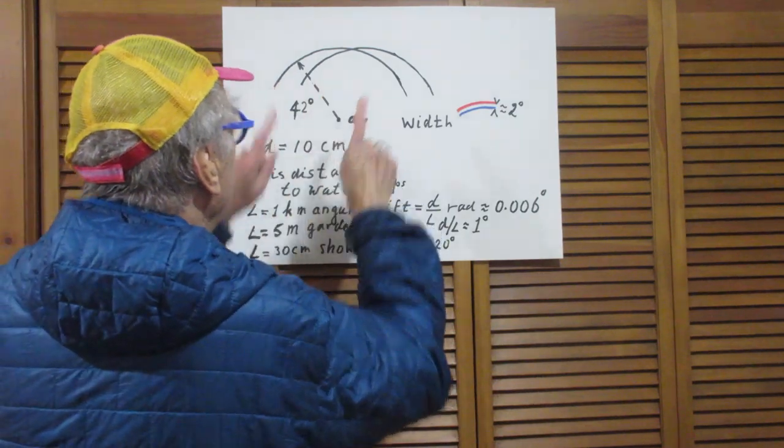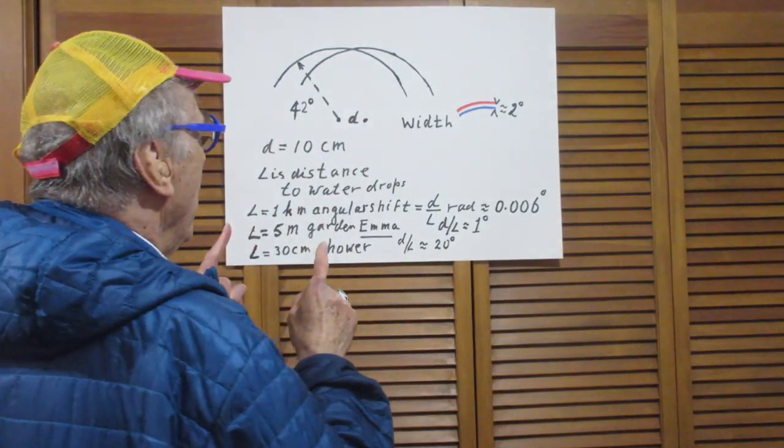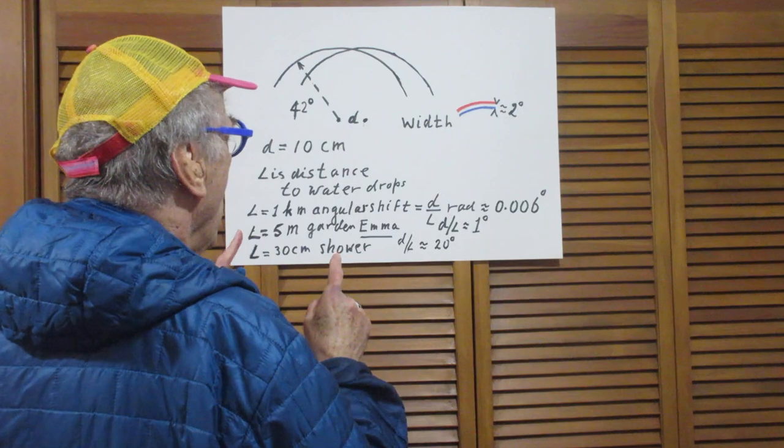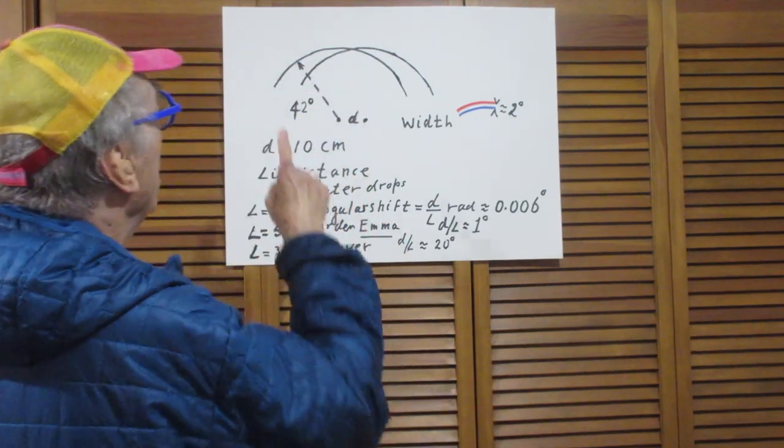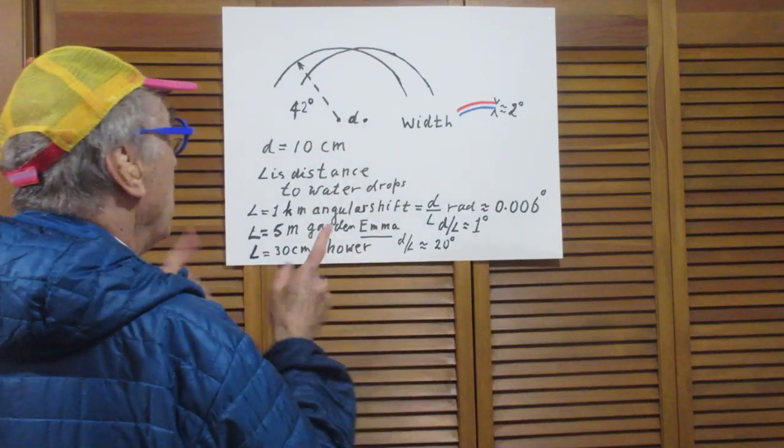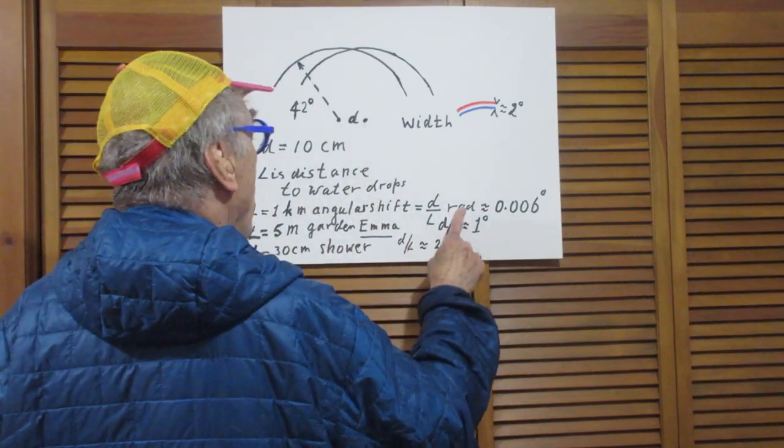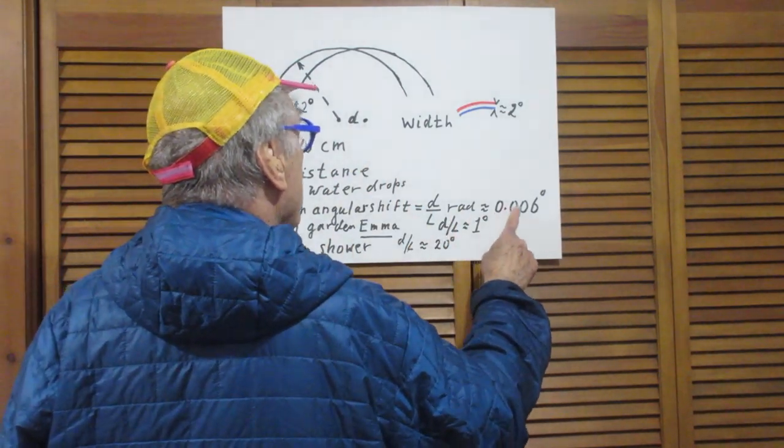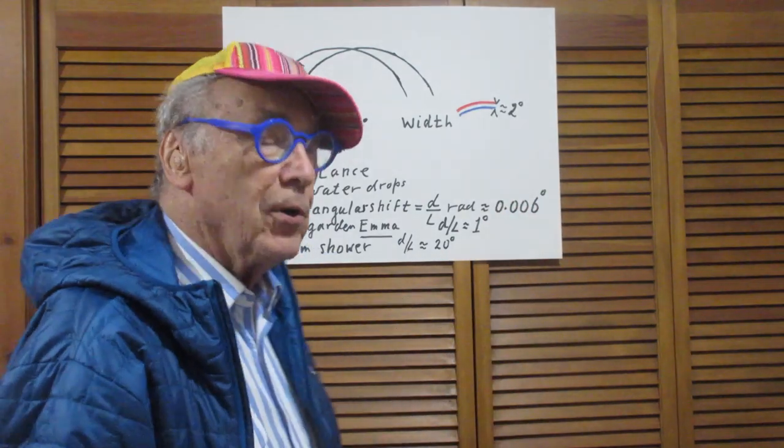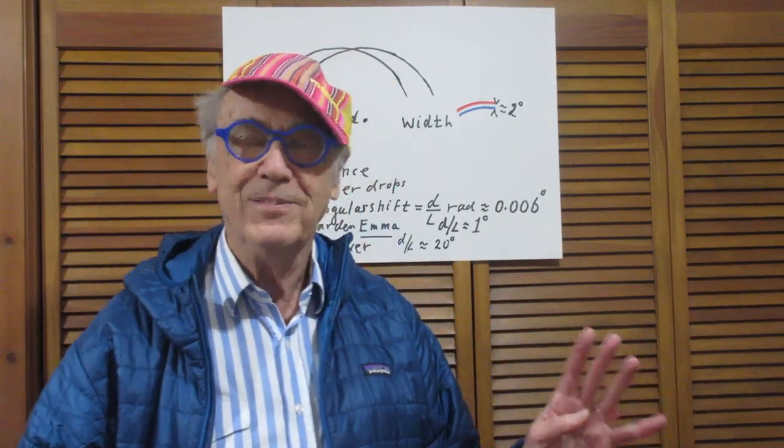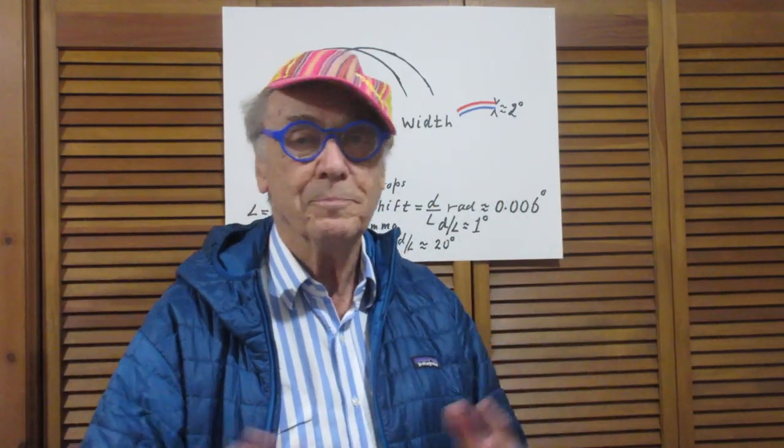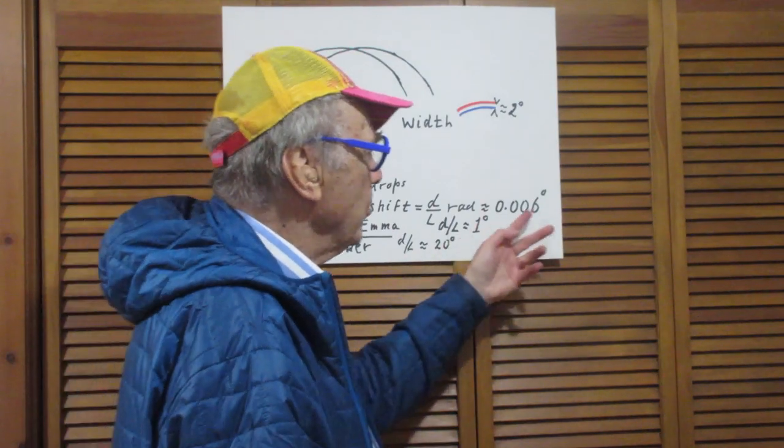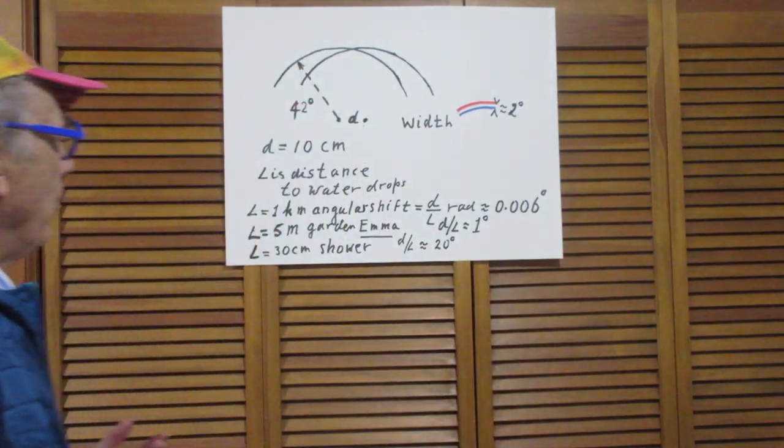Then the angular shift, because your eyes are 10 centimeters apart, the angular shift between the two rainbows, because you have two eyes, is d over L radians, which is 0.006 degrees. So there is no way, no way, no way that you could ever see two rainbows. You see one rainbow, 0.006 degrees apart.